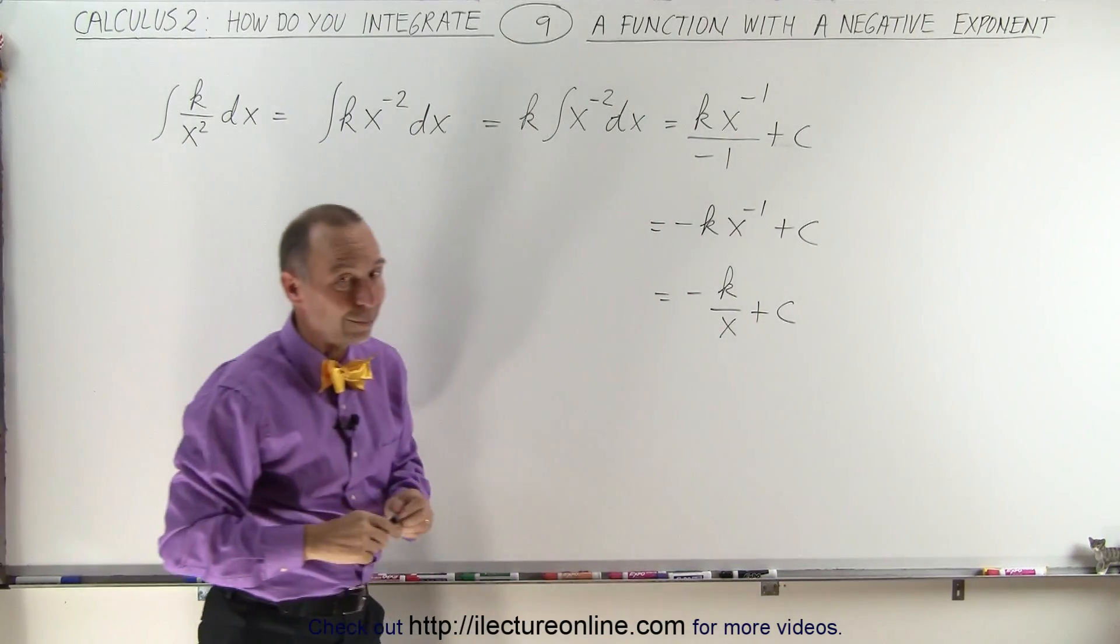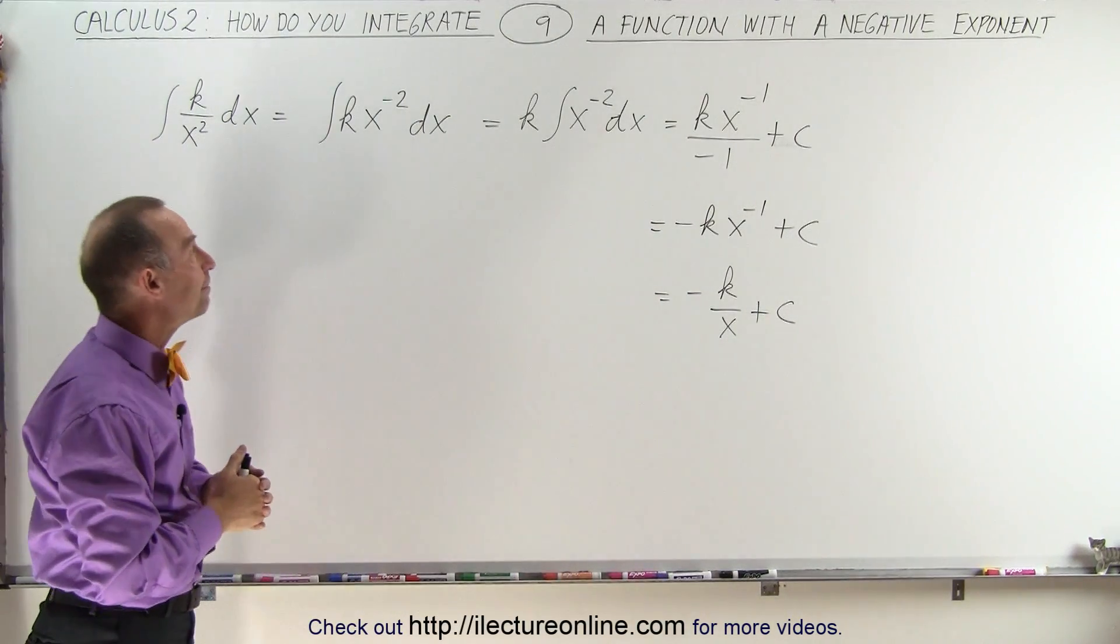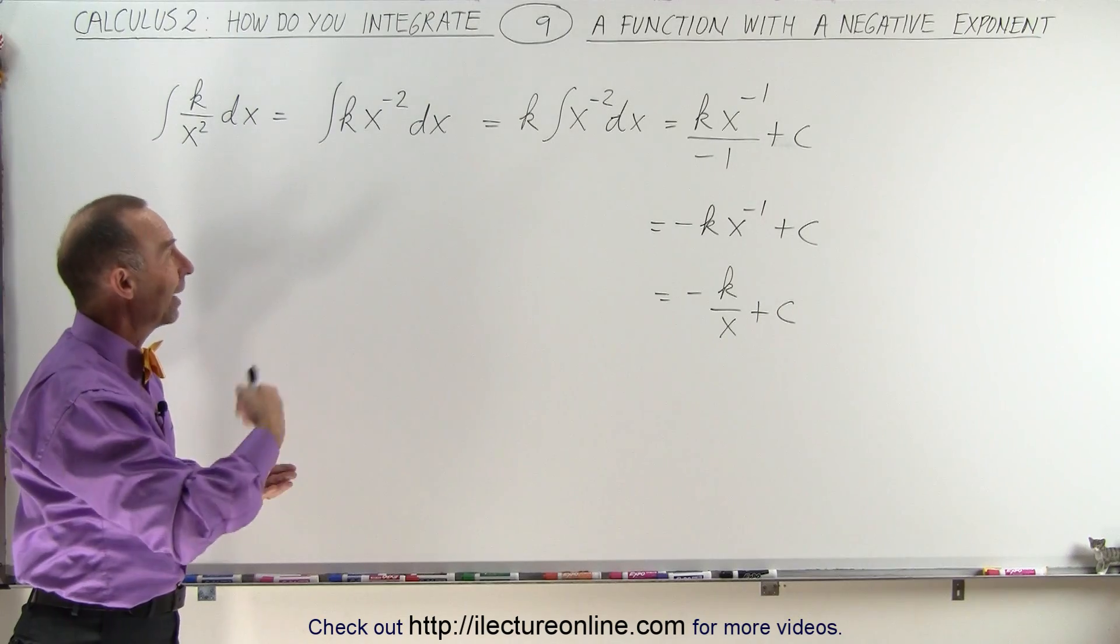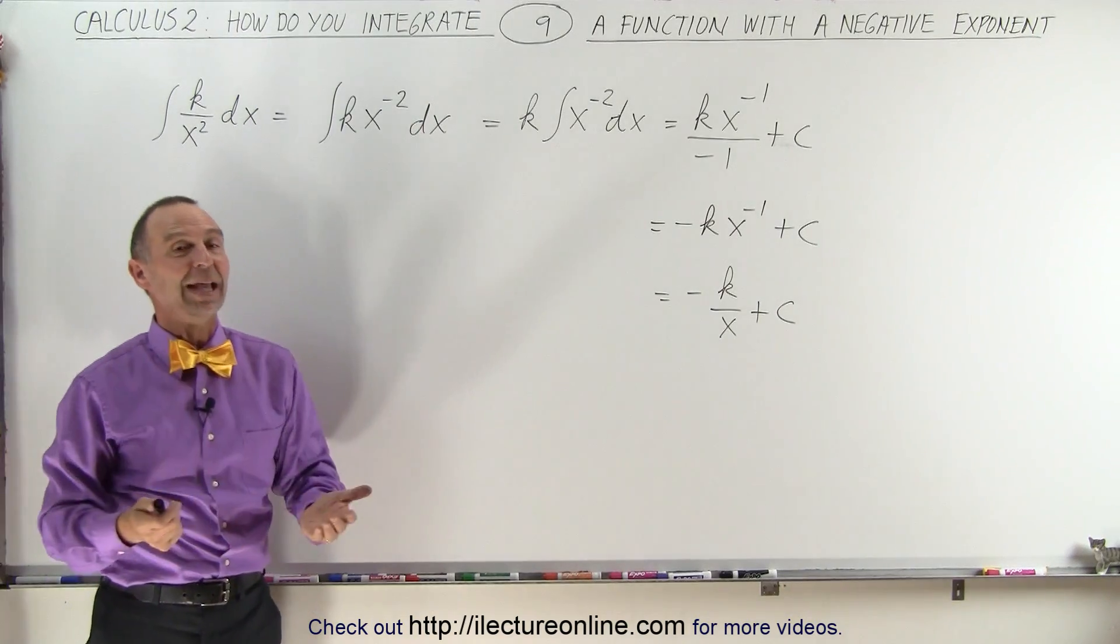So you can see that we do it in exactly the same way. Add one to the exponent and divide by the new exponent. And that's how it's done.